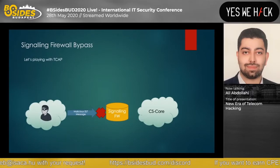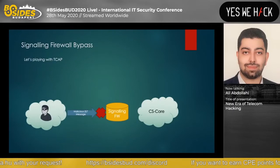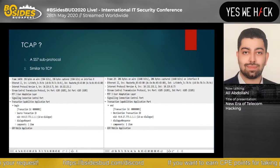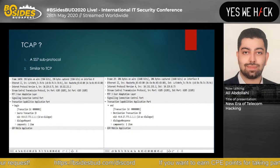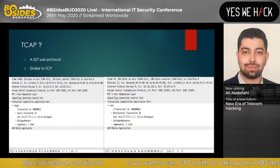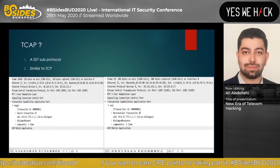Signaling Firewall Bypass: to bypass these kinds of firewalls we need to play with TCAP. TCAP (Transaction Capabilities Application Part) is an SS7 sub-protocol layer — it's like TCP. You can see a Wireshark screenshot showing a TCAP Begin message and a TCAP End message.